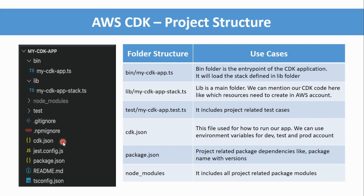We will explore this further when we initialize the project and do deployments to create an S3 bucket or EC2 instance. The package.json file contains project-related dependencies — package names and their versions. When you run npm install, it reads package.json and installs all packages into the node_modules folder.